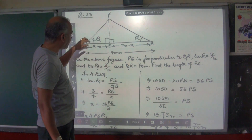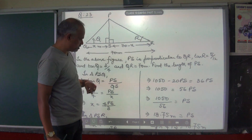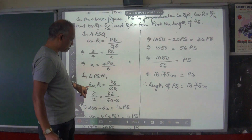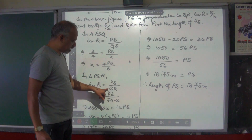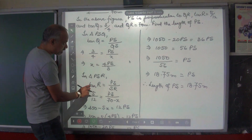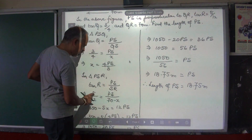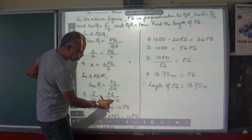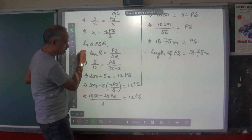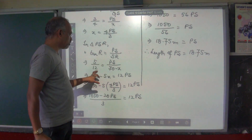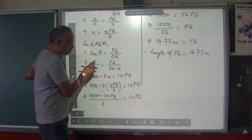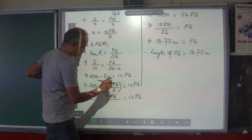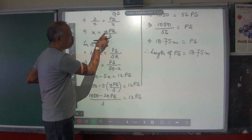Now use the second triangle, triangle PSR. The angle here is R. Tan R is equal to perpendicular PS by base SR. Tan R's value was given as 5 by 12. So 5 by 12 is equal to PS divided by SR, and the base was 70 minus X. Cross multiply: 5 times 70 is 350, 5 times minus X is minus 5X, equals 12 PS. But you already know the value of X, which is 4PS divided by 3. Substitute that here.